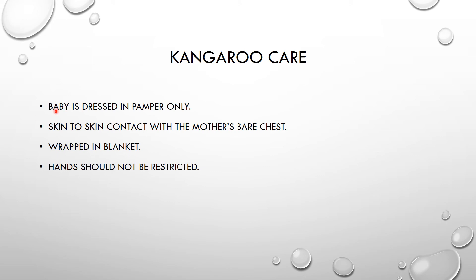For kangaroo care, the baby should be dressed in a nappy only — we remove all the clothes — and place the baby in skin-to-skin contact with the mother's chest, with the baby facing the mother and the mother facing the baby, in direct chest-to-chest contact. Then a blanket is wrapped around them. We always make sure the hands of the baby are not restricted, so that if the baby is feeling hot they can put their hands outside the blanket, and if cold they can put their hands inside — allowing the baby to regulate their own temperature.